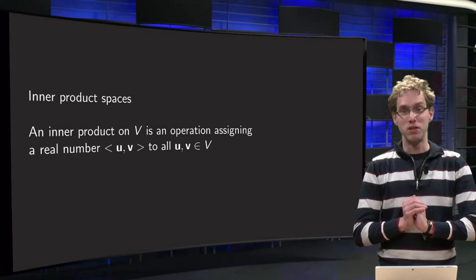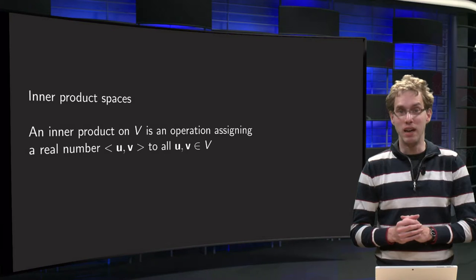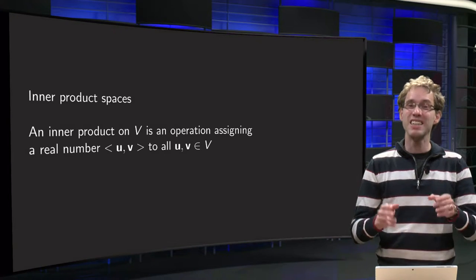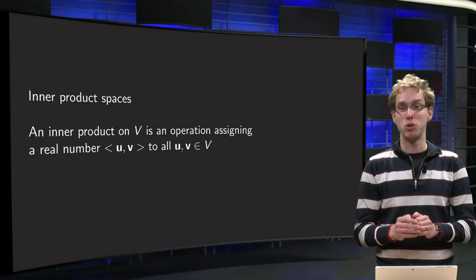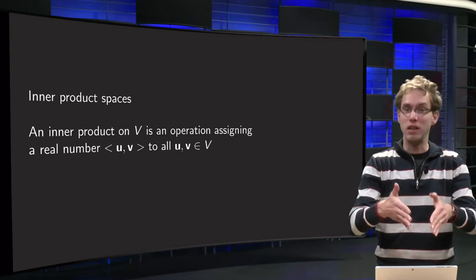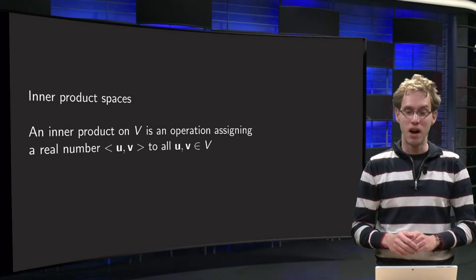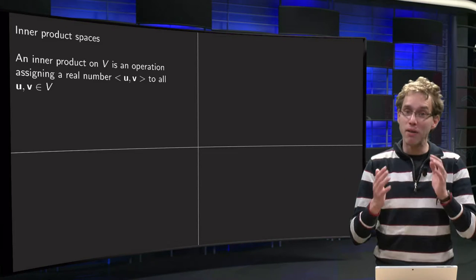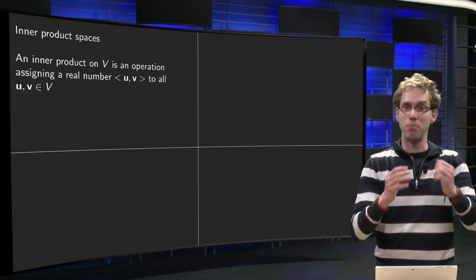Suppose we have some vector space V and any two vectors u and v in our vector space. An inner product assigns a value, a real number, to any of those two vectors together. So you put in two vectors in your inner product and you get a number out. But not in any way. You have to satisfy a few properties in order to have an inner product.